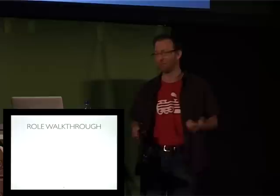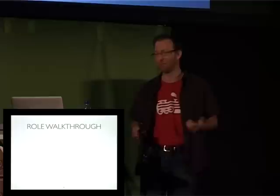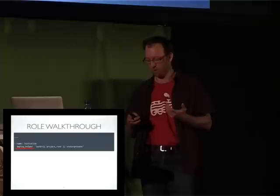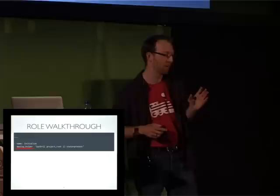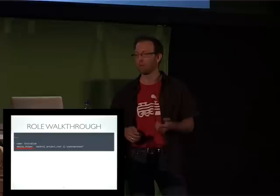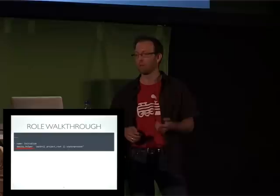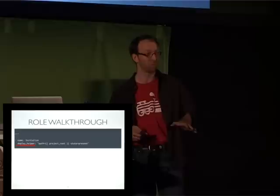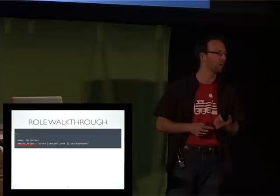I'll walk you through the role to map the Ansible tasks to the five steps I described. The first slide shows an initialize task. Ansible is built up of roles, and inside the roles you'll have tasks that do certain steps. The first parameter here is 'deploy_helper' — that's the name of the module we're using. This module is written to do the deploys, and it's available from Galaxy separately, so if our role doesn't match what you're doing, you can use the module on its own.